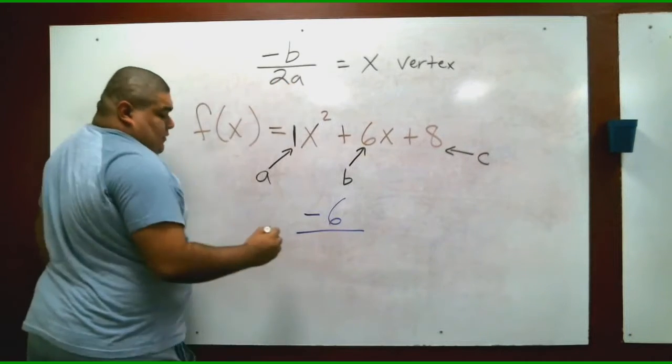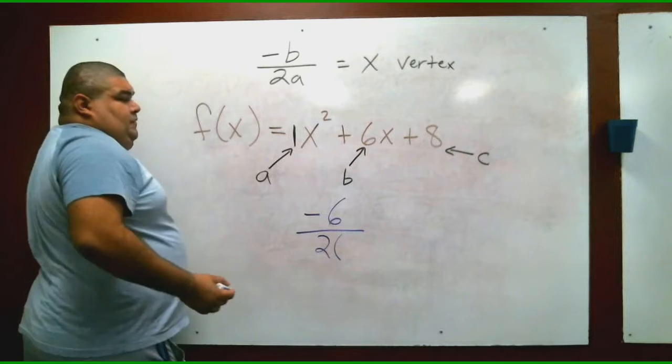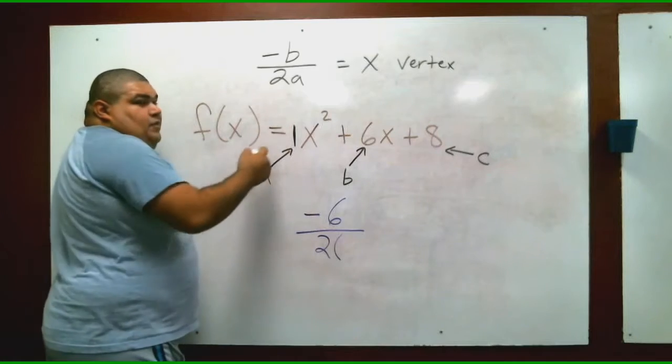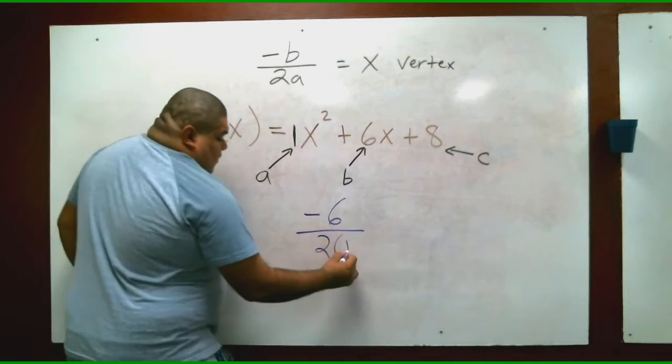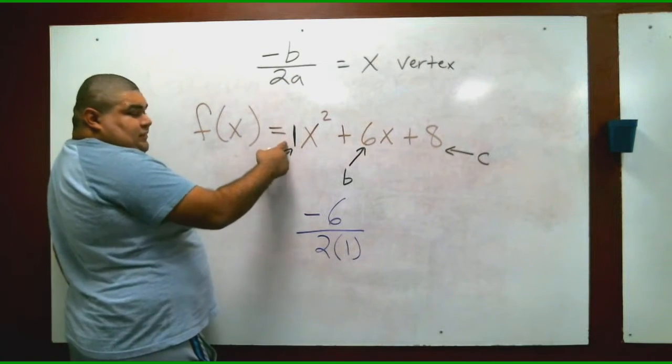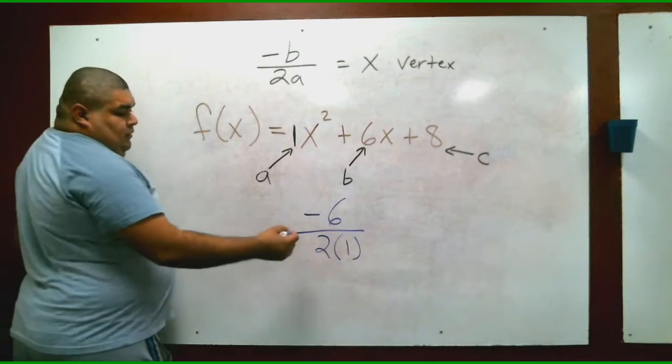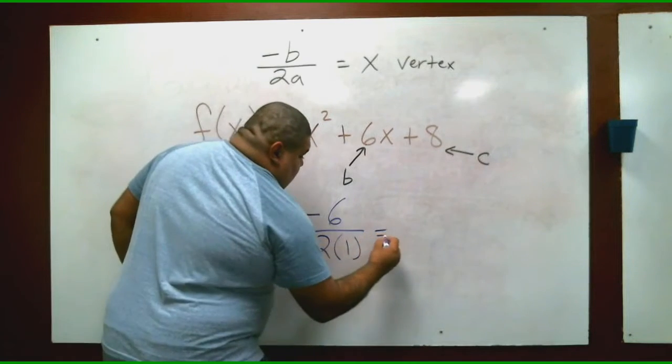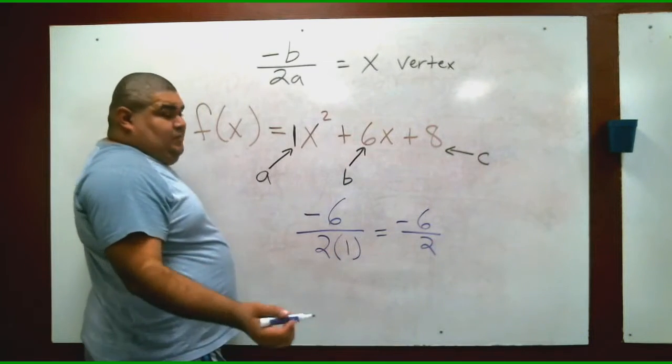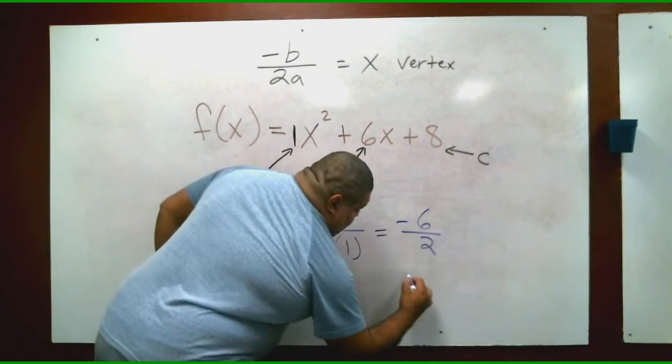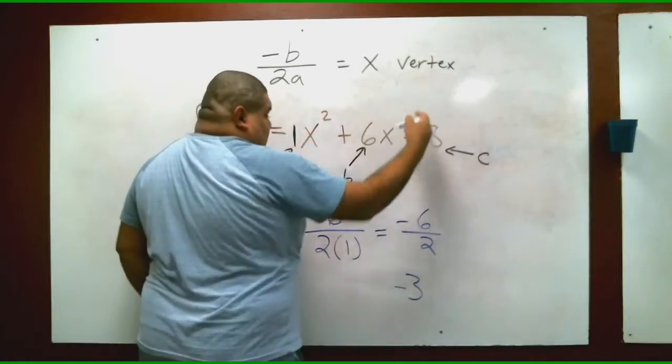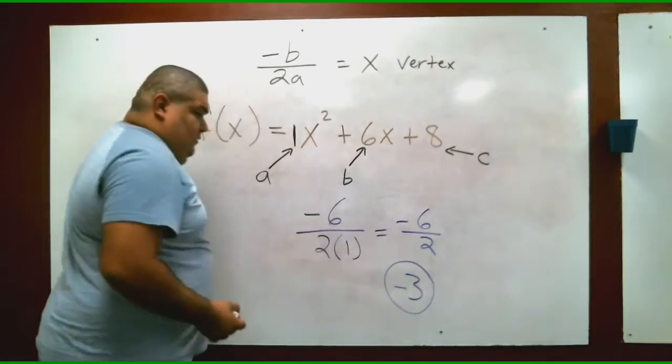2 times a, what is the number that is a? It's one, right? The one in front of the x². So 1, notice that it's positive, there's no sign there, so whatever it is you bring it down with it. 2 times 1 is 2, so this becomes -6 over 2, which technically becomes 2 can go into 6 three times. Positive times negative is negative, so your answer for x-vertex is -3.